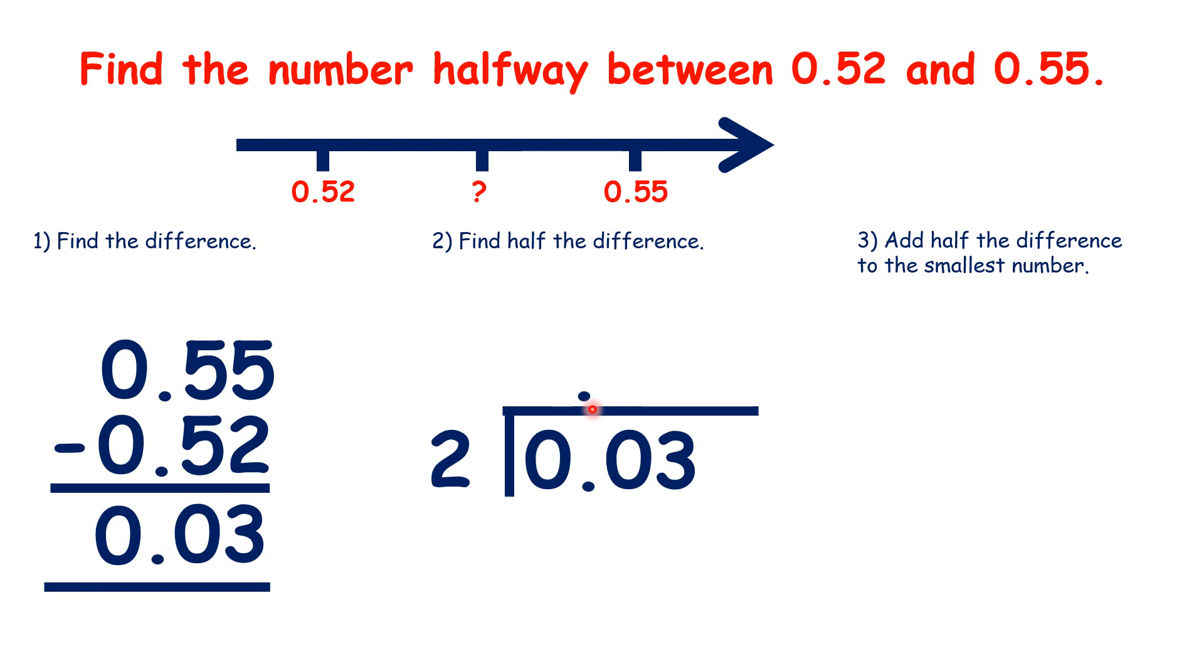So there's our decimal point, and we have 0, 0. Now, 3 divided by 2 is 1 remainder 1. So we need to extend our dividend into the thousandths with a 0 on the end. Then that's our 1 remainder, and 10 divided by 2 is 5.